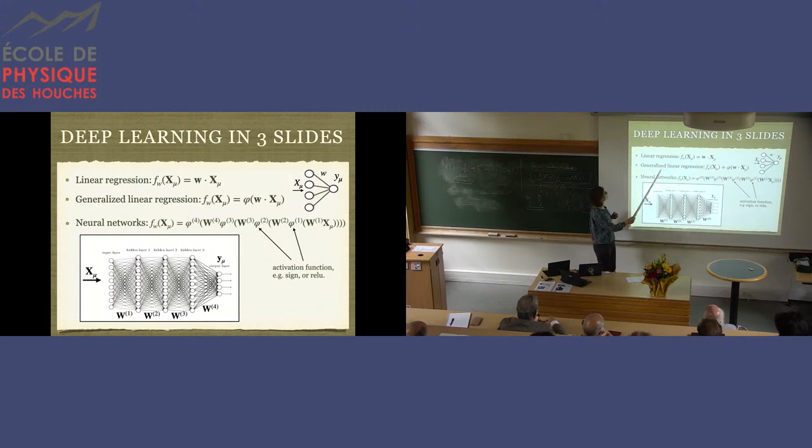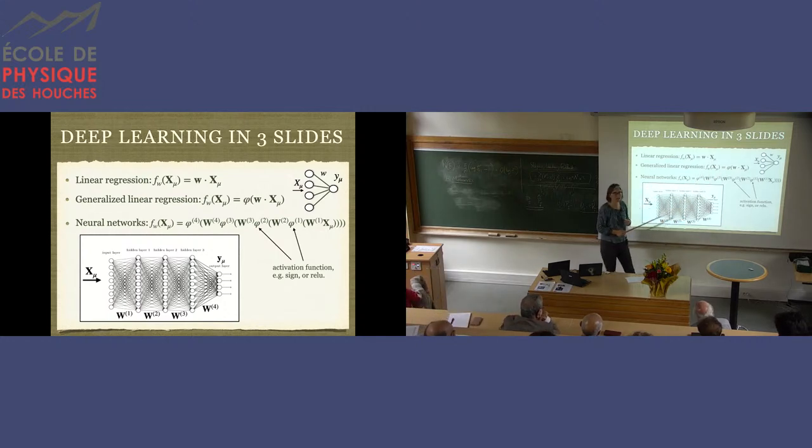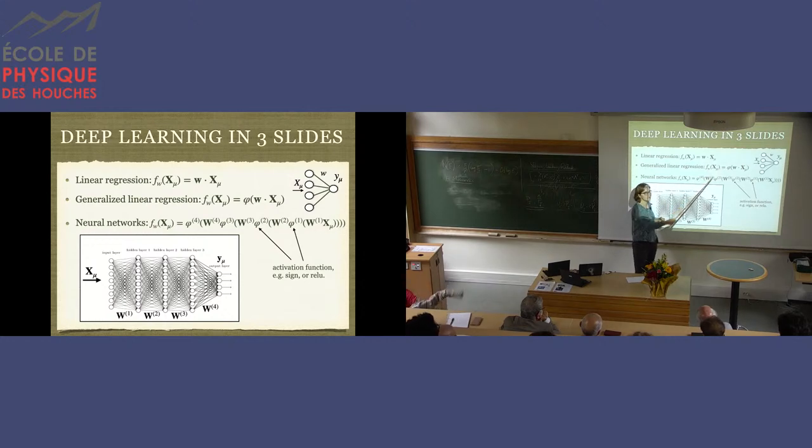It's just a multiplication of a vector you don't know times the data that you have. And you can talk about generalized linear regression, because if you multiply the scalar product of two pretty generic vectors, it will not be plus minus one. It will be some real number. So if you want to add here, for instance, a function phi here that is a sign, then this can return plus minus one. And then this generalized linear regression would be a good ansatz for this classification of cats and dogs. The trouble with linear regression is that this is not enough. This will not work for separating cats from dogs.